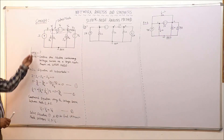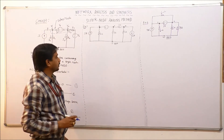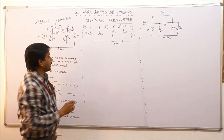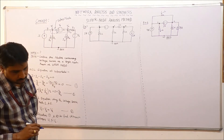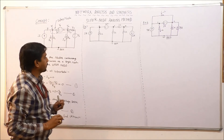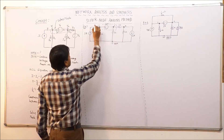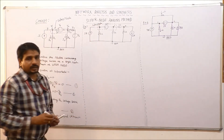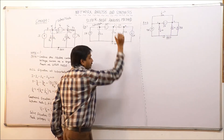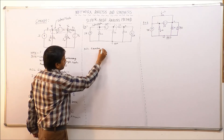Now I will explain this with the help of an example. Consider this network: we have node 1, node 2, node 3, and one reference node. Between node 1 and node 2 there is a voltage source of 10 volts. All resistances are taken as 1 ohm for simplicity. Because there is a voltage source between node 1 and 2, I will form a super node using nodes 1 and 2. I will write only one super node equation for them, and a separate KCL equation for node 3.